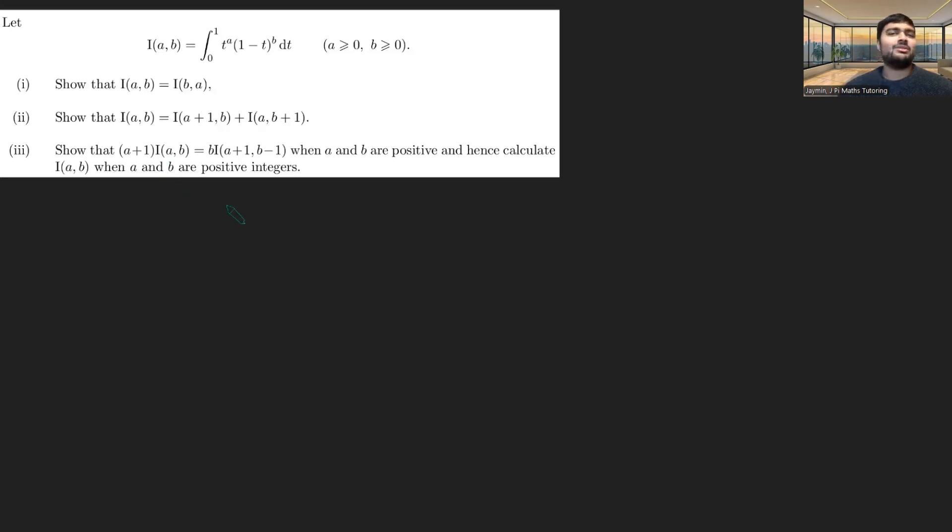What I think is quite cool, and what follows the standard recipe of lots of STEP questions, is that the parts are all related. And this part 3 here, the final part, is kind of putting together all the things we've worked out. And so we should, in theory, end up with a formula for this integral for positive integer values of a and b, no matter how big they are, which I think is pretty cool.